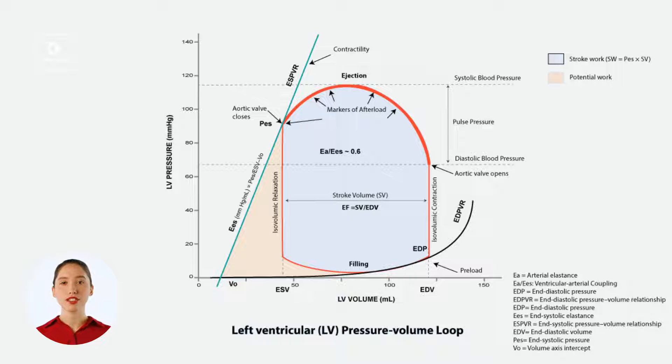Now let's go back to the pressure volume loop and see how it relates to this equation. Here is a typical left ventricular pressure volume loop with volume on the x-axis and pressure on the y-axis. The loop progresses through four main phases: isovolumetric contraction, ejection phase, isovolumetric relaxation, and filling phase.